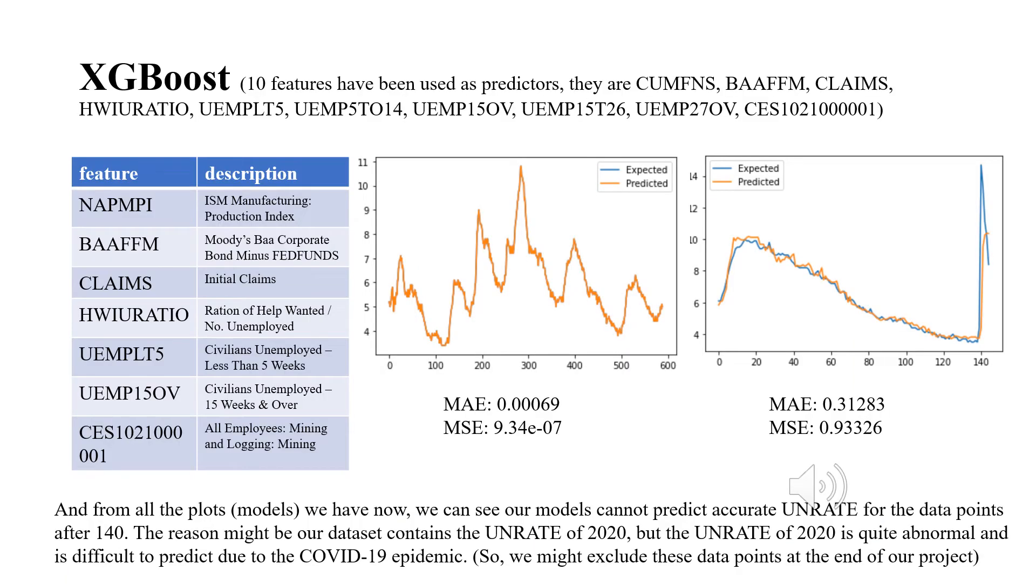The last model I built is also an XGBoost model. But here I use 10 features, and I choose the 10 features based on the correlation they have with the unemployment rate. All of them have a correlation with unemployment rate greater than 50%. For this model, I used three months to predict one month. The results are also not bad. For the training set, we have a very small mean squared error. And for the test set, the mean squared error is about 0.93, which is also less than the one from the baseline model.